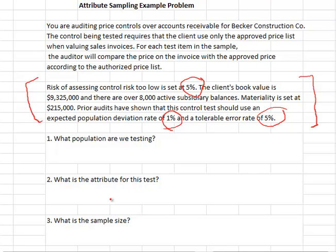What population are we testing? This question is what are all the instances? This is all available prices on all open invoices at year end.